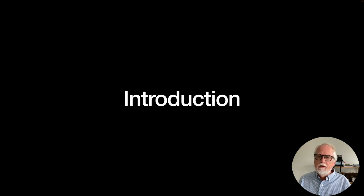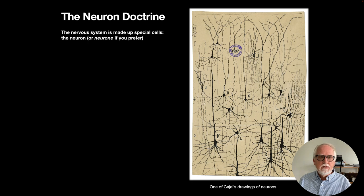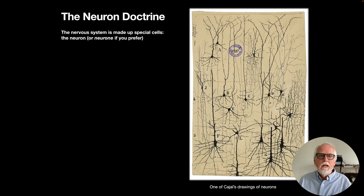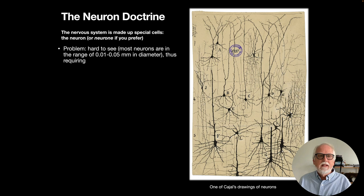As an introduction to the nervous system, let's talk about a very old concept now known as the neuron doctrine — the idea that the nervous system is made up of special cells called neurons. The problem of showing this was that neurons are hard to see; most are in the range of 0.01 to 0.05 millimeters in diameter.